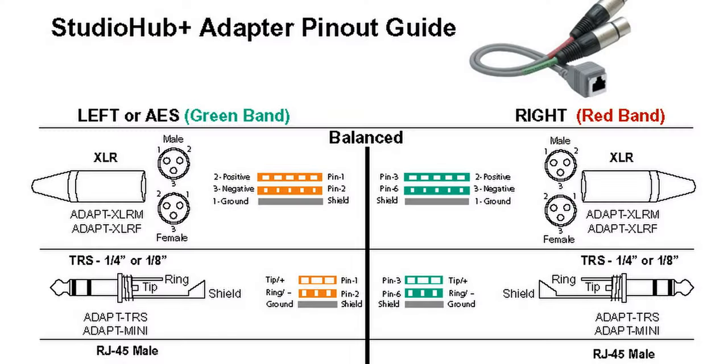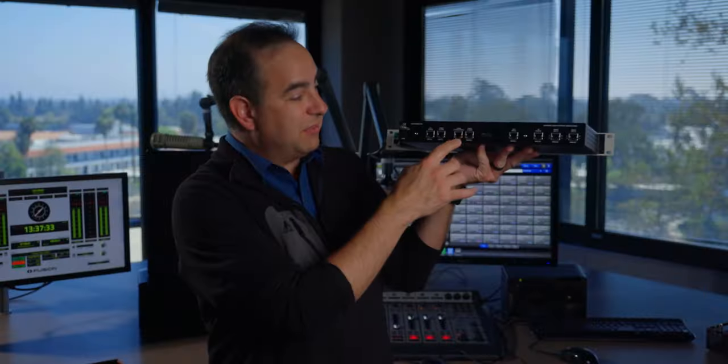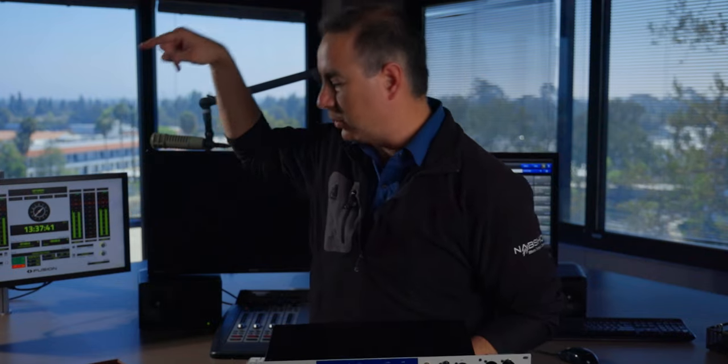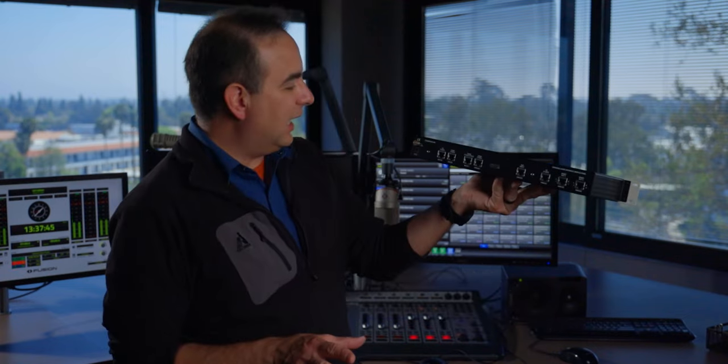And then on the back, this is where the magic happens. It's Studio Hub format. It's the RJ45, which is basically Studio Hub and everything here is all done by that, which makes it easy when you connect it into your Axia or Wheatstone or whatever system you're using. And it just works.